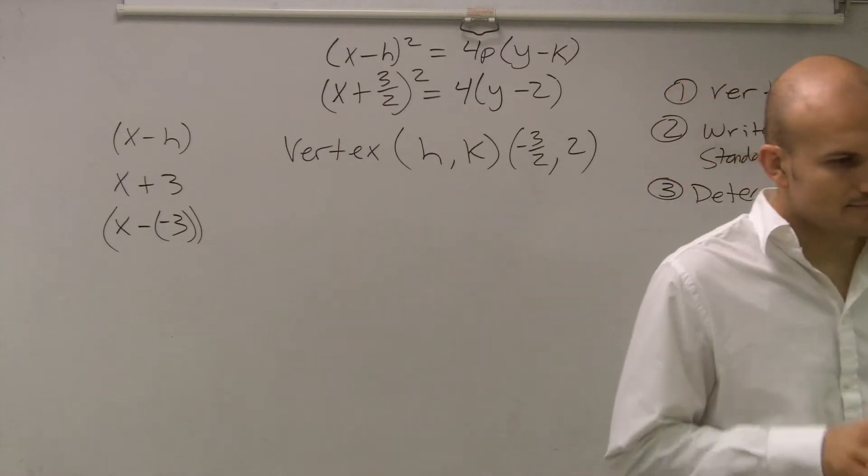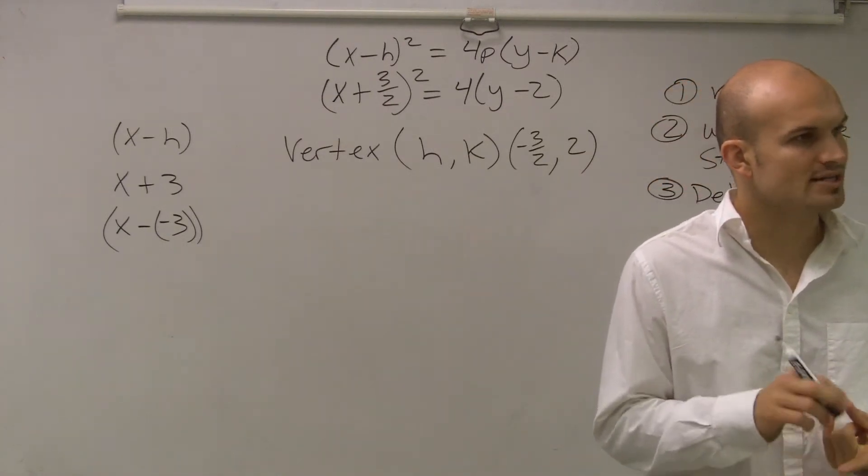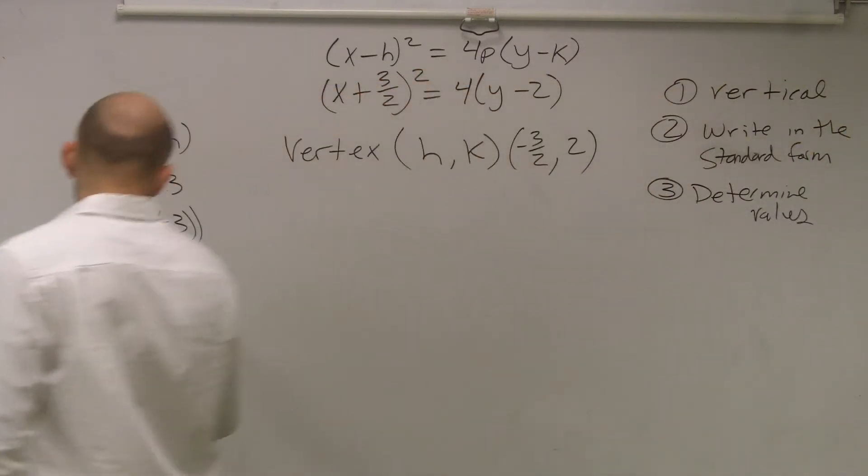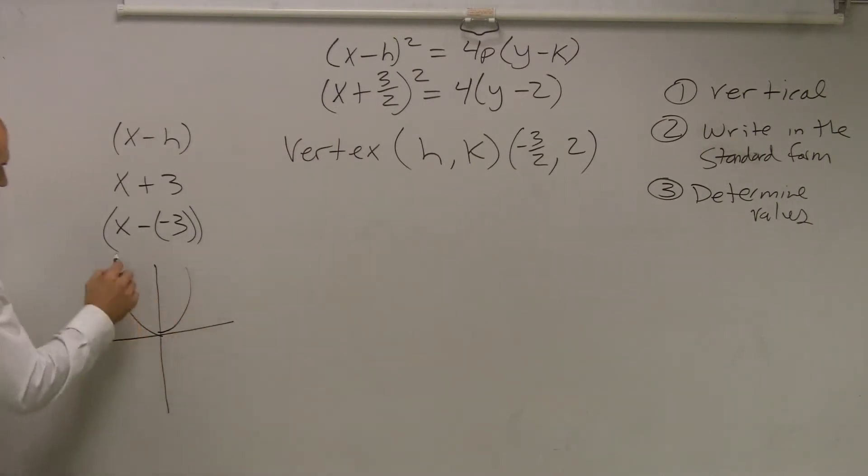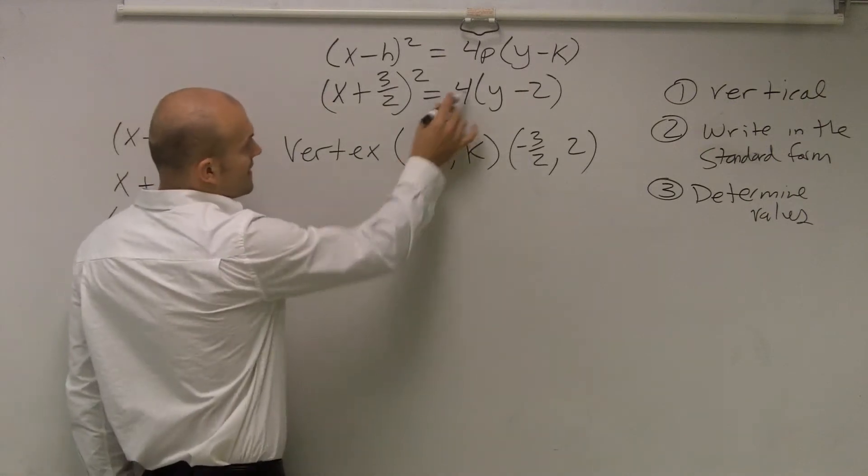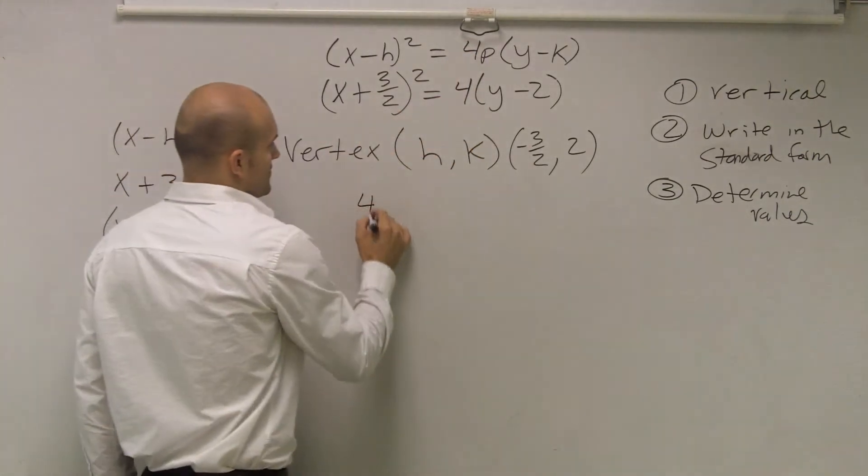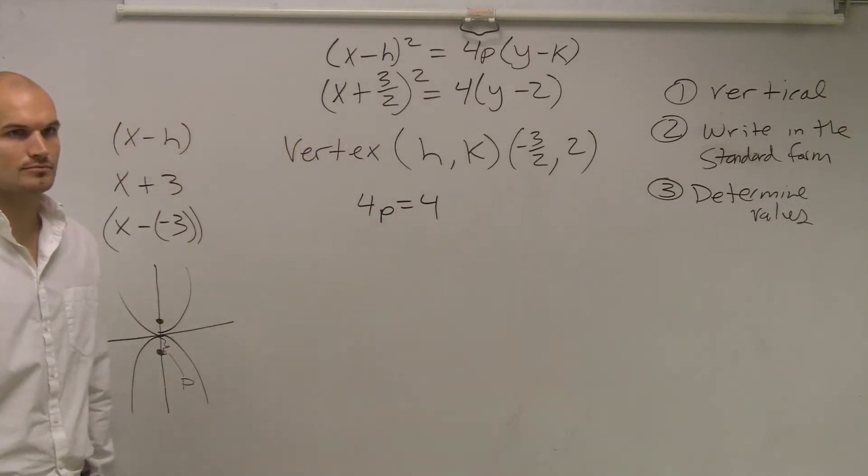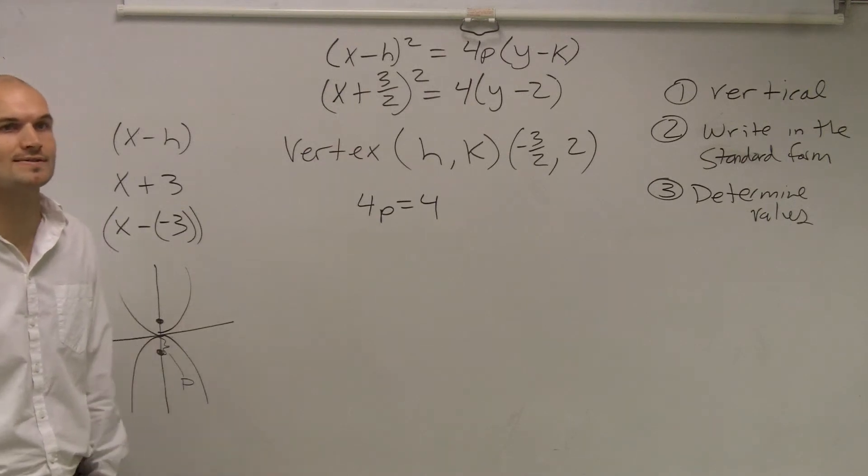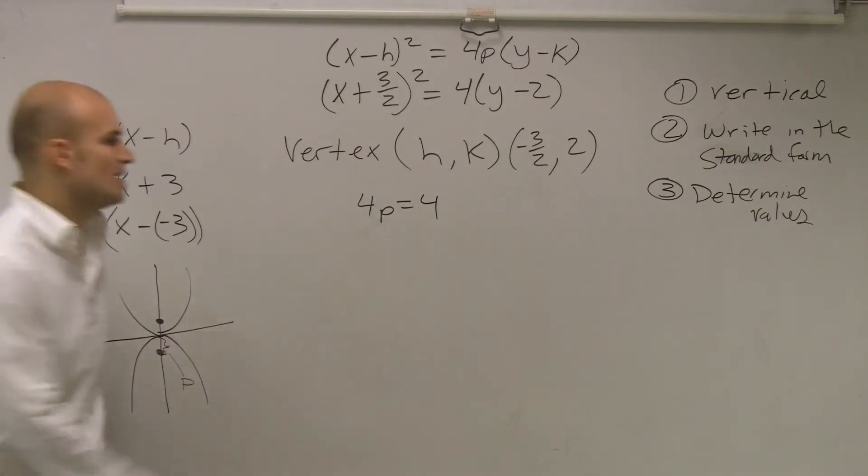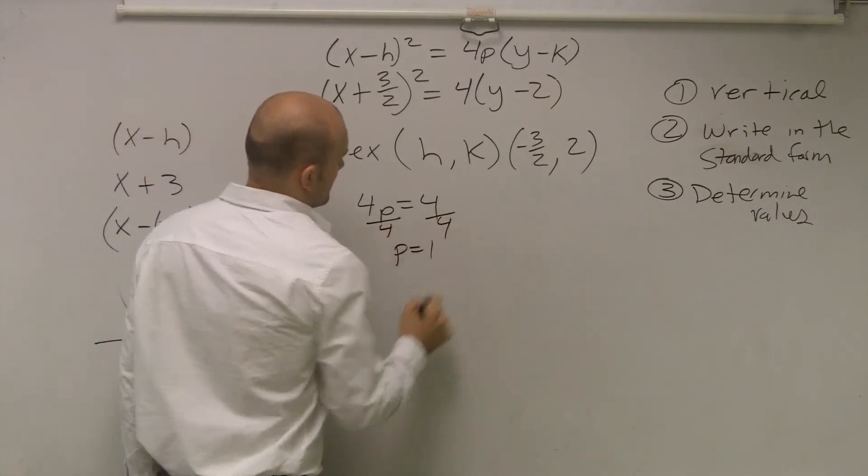The next thing we want to do is determine the focus and the directrix. Remember, we have a vertical parabola. So I don't know how this parabola looks. It either opens up or opens down. The one thing I do know is that parabola is going to have a focus and a directrix. And the distance from the focus to the vertex is p. So I need to determine what is my p value. If I look at this formula, I have 4p in the standard form, and the number that's multiplied by y is 4p equals 4. So I do 4p divided by 4, I get p equals 1.